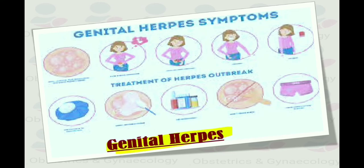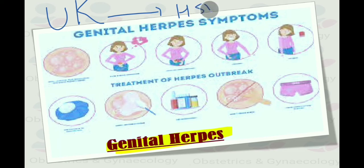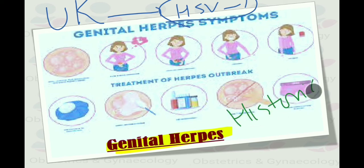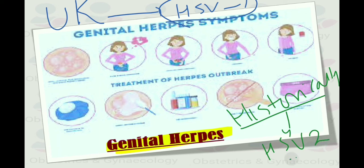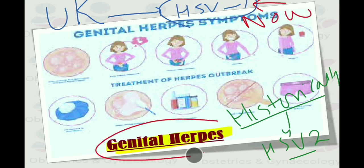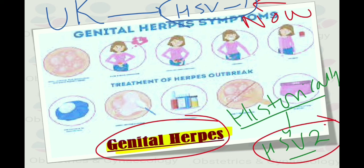Regarding genital herpes in the UK: historically, HSV2 was considered to be responsible for genital herpes. However, now HSV1 is considered to be the most common cause of genital herpes in the UK, and HSV2 is the likely cause of recurrent anogenital symptoms.